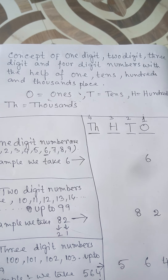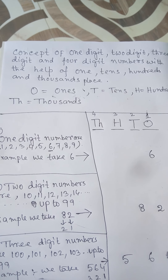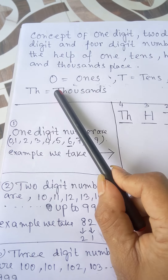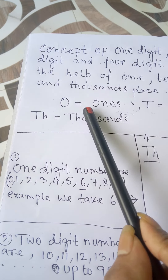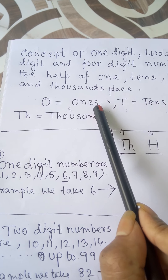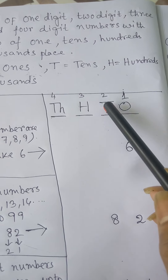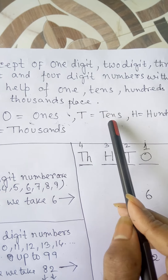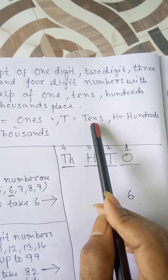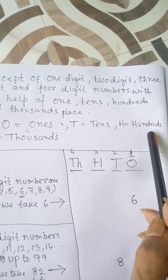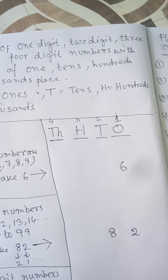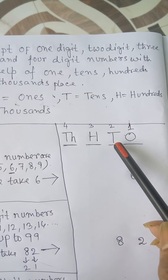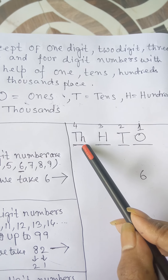We will learn how to place one-digit, two-digit, three-digit and four-digit numbers according to their place values. O stands for ones, T stands for tens, H stands for hundreds, and TH stands for thousands.